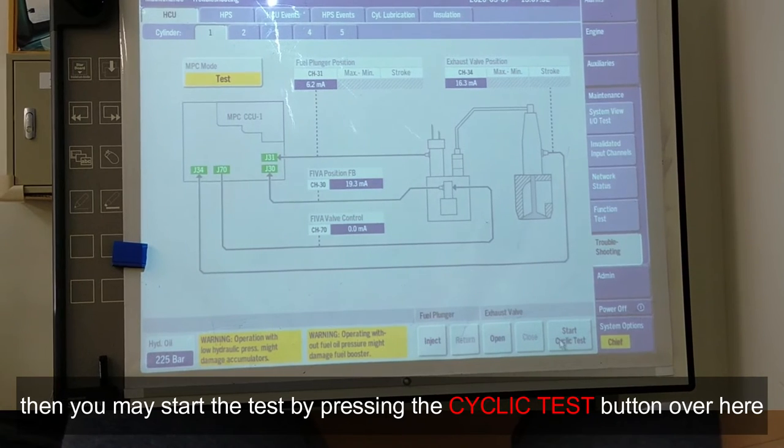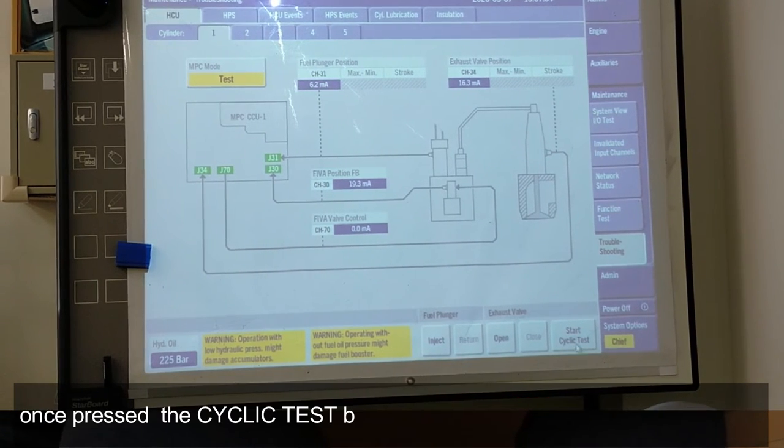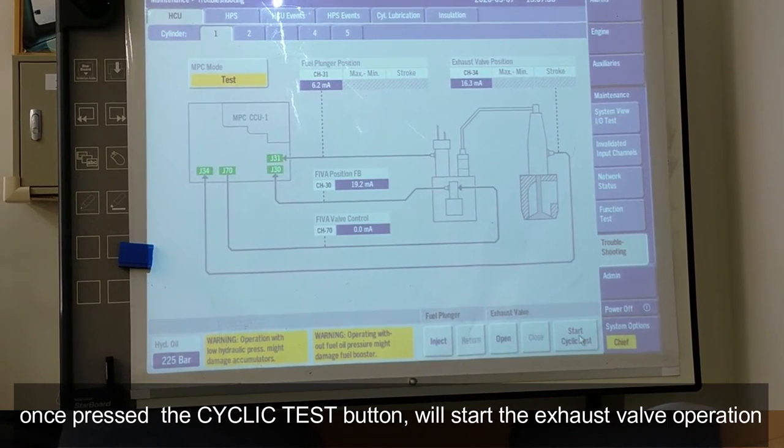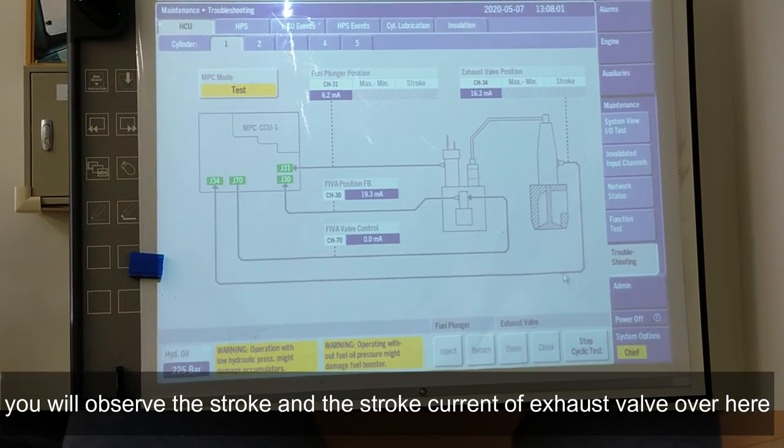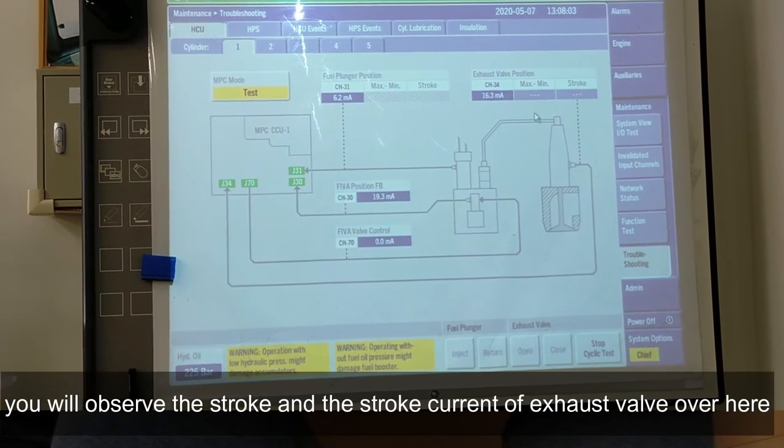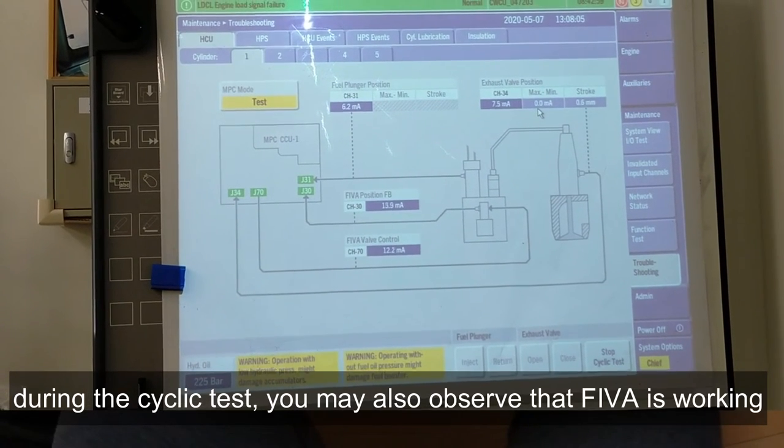By pressing the cyclic test button over here, once you press the cyclic test button you'll start the exos valve operation. You will observe the stroke in the stroke card of the exos valve over here.